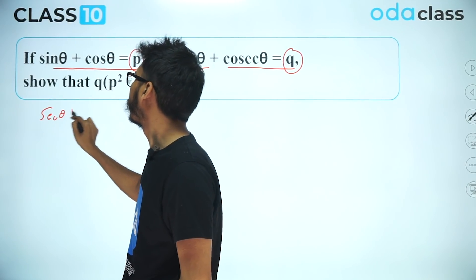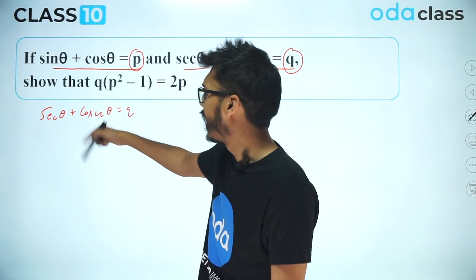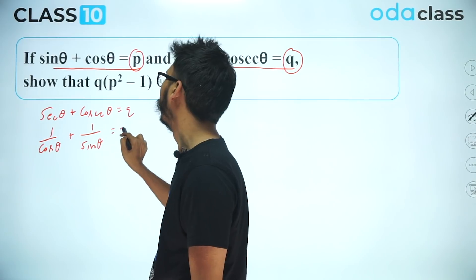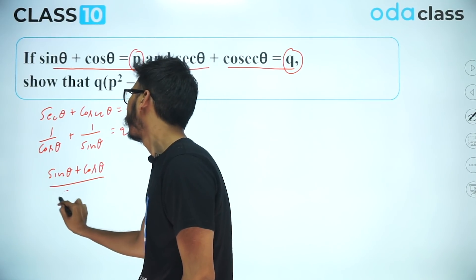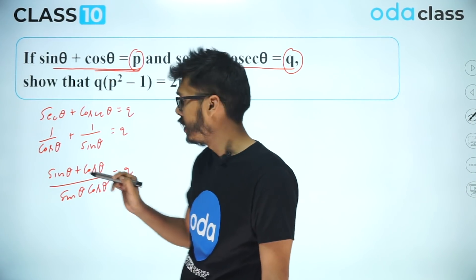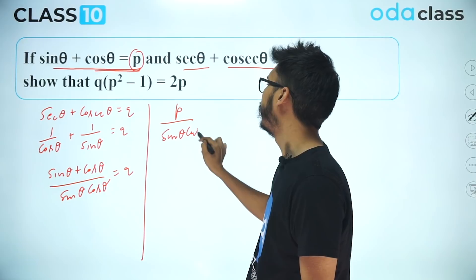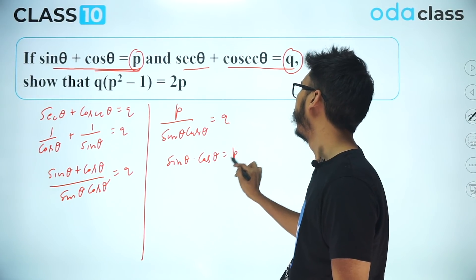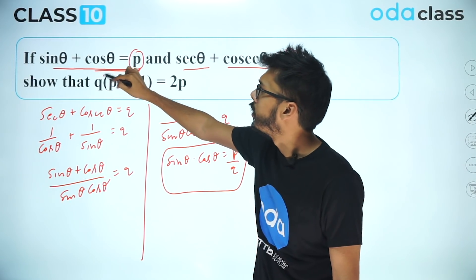Working on secθ + cosecθ = q: converting gives 1/cosθ + 1/sinθ = q. Taking LCM, you get (sinθ + cosθ) / (sinθ · cosθ) = q. Since sinθ + cosθ = p, this becomes p / (sinθ · cosθ) = q, so sinθ · cosθ = p/q. That is one important piece of information we have gained.